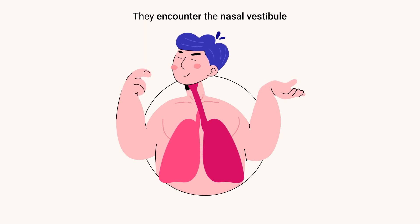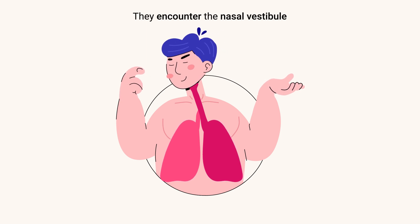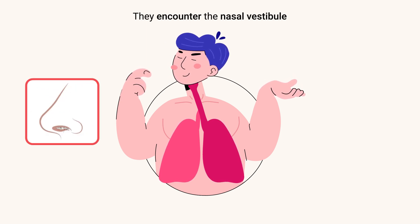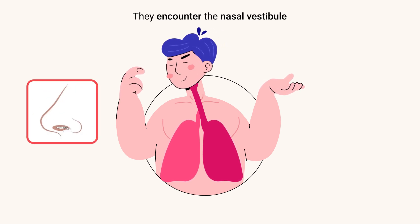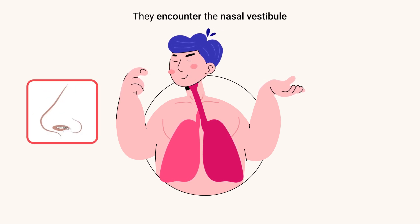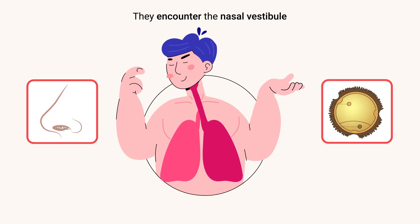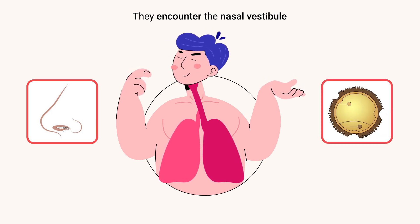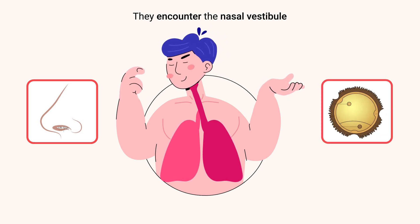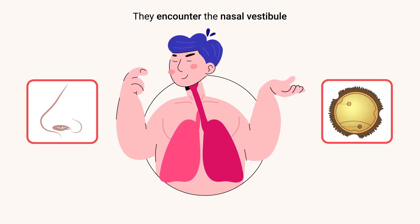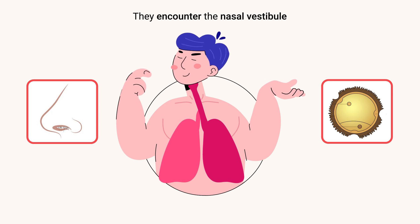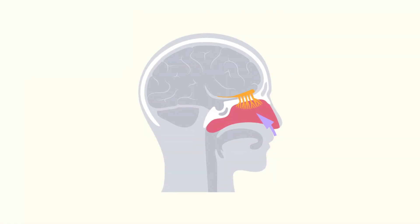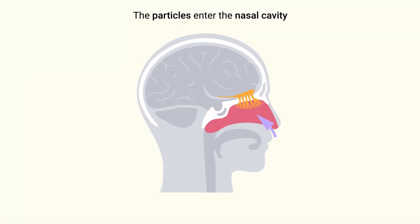First, they encounter the nasal vestibule, which is lined with coarse hairs that act as a primary filter, trapping larger particles such as sand or large pollen grains. However, some smaller particles can bypass this initial defense.